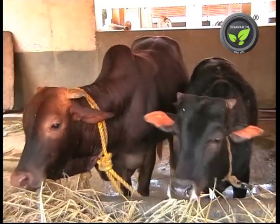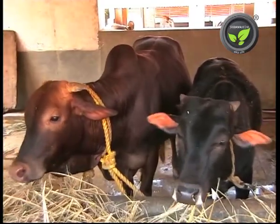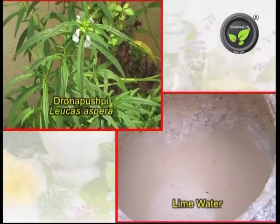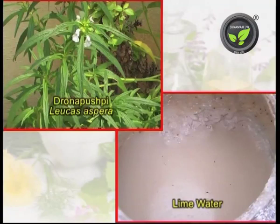5th Medicine. Ingredients: Drona Pushpi leaves and lime water. Method: Mix half a kilogram of Drona Pushpi leaves in the lime water. Apply this liquid once a week for 4 weeks.